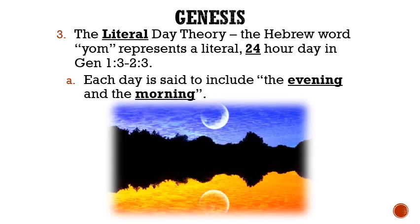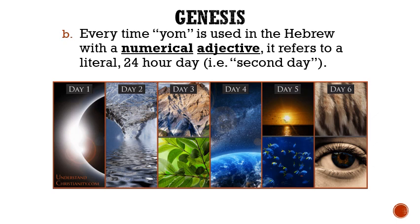There are four primary evidences used to support the literal day theory. First, letter A, each day is said to include the evening and the morning. Anytime the evening and the morning are used in Scripture, it denotes a 24-hour period of time. Secondly, every time yom or day is used in Hebrew with a numerical adjective, it always refers to a literal 24-hour day.